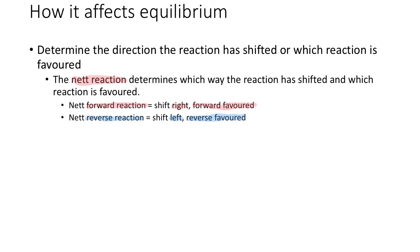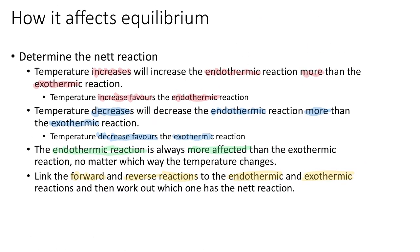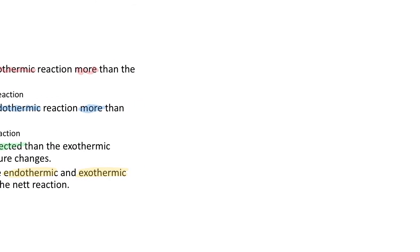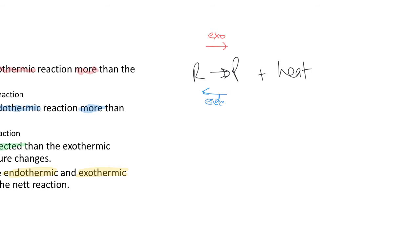Let's go through an example. Let's say I have reactants changing to products, and I have plus heat on the products side. If that's my reaction, is this endothermic or exothermic going forward? It's exothermic going forward and endothermic going backwards — hopefully you've got that from the last video.